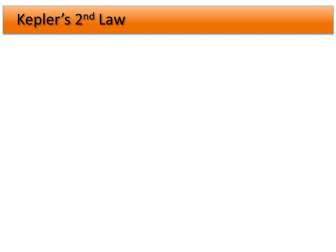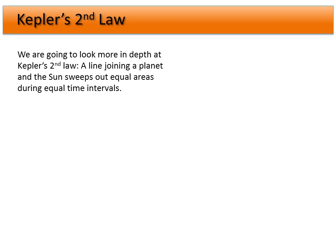Let's revisit Kepler's second law — this is a powerful statement. It says that a line joining a planet and the Sun, or two objects where one is orbiting another, sweeps out equal areas in equal time intervals.